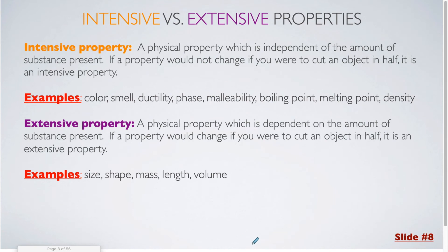Alright, our final concept for today is going to be intensive versus extensive properties. An intensive property is a property which is independent of the amount of substance which is present. If a property would not change if you were to cut an object in half, it is an intensive property. And this idea here at the bottom is really how you're going to be determining whether a property is intensive or not. So for example, let's say that we have a blue piece of construction paper. If I were to tear that blue paper in half, both halves would still be blue. So that means that the color is independent of the amount of paper that I have.